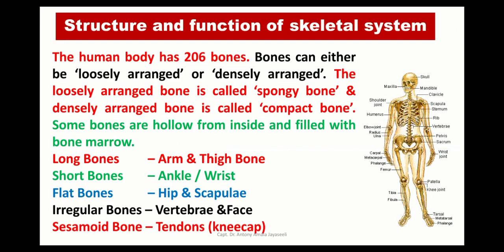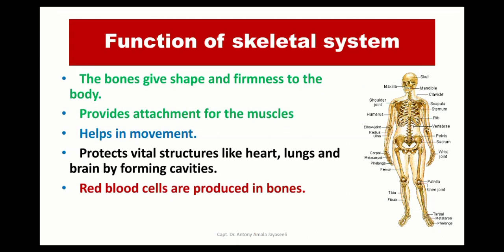Moving on to Health and Hygiene, we will learn about the human body. The skeletal system is formed of bones. The different types are spongy bone and compact bone. Based on their structure, they can be classified as long bones, short bones, flat bones, irregular bones, and sesamoid bones. The main function of the skeletal system is to give shape and firmness to the body, provide attachment for muscles, help in movement, and protect vital structures like the heart, lungs, and brain. RBCs are produced in the bone marrow.